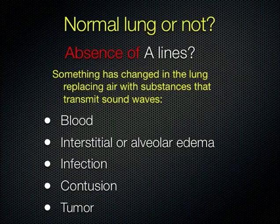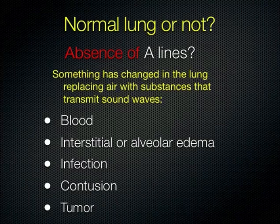When wondering whether you have normal lung, you're looking for: are the A-lines gone? If the A-lines are gone, that means there's no air — something else has replaced the air in the lung. That could be blood, edema, infection, contusion, or tumor. Any number of things can obliterate the A-lines, and then you have to start thinking about what has taken their place.